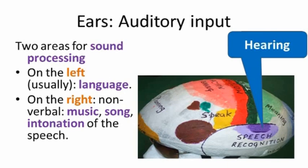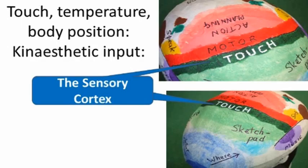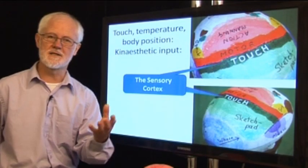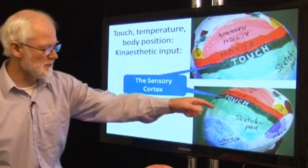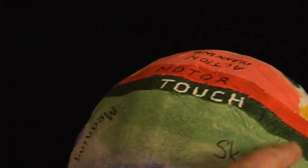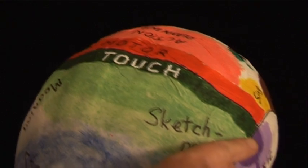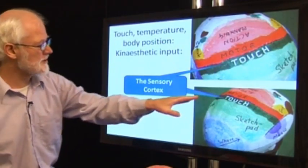The next input is the sensory cortex, where we feel and touch things and have sensitivity to temperature. This is a green strip like a hair band going across the top of your head. All the inputs from your body come to this strip along here.